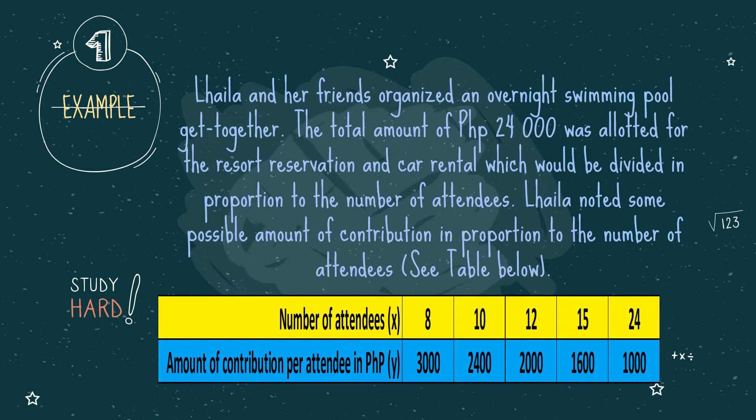For the number of attendees: if there are 8 attendees, the amount of contribution per attendee will be 3,000. For 10 attendees, it is 2,400 pesos. For 12 attendees it is 2,000 pesos each. For 15 attendees, the amount of contribution per attendee is 1,600. And for 24 attendees, they have to pay 1,000 pesos each.